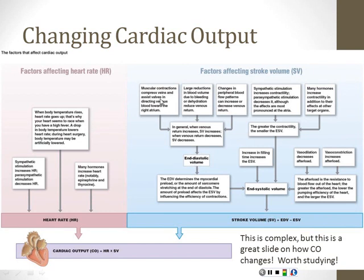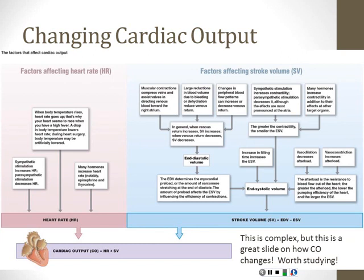What affects EDV? One factor is venous return — how much blood comes back to the heart. We talked about the skeletal muscle pump and how it helps push blood back toward the heart. When venous return increases, end-diastolic volume increases. When venous return goes down, EDV goes down. So the more blood that comes back to the heart — the higher the venous return — the greater the stroke volume and the greater the cardiac output.